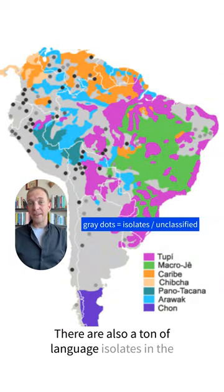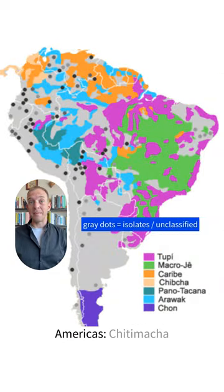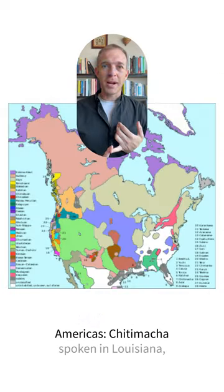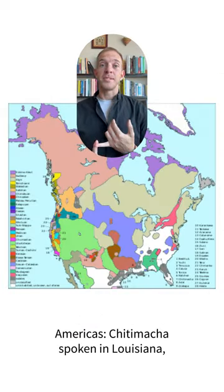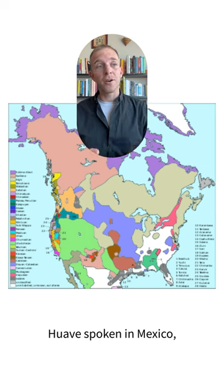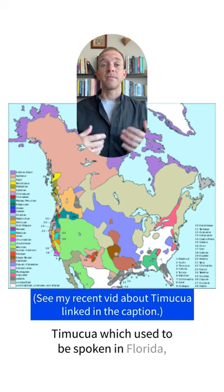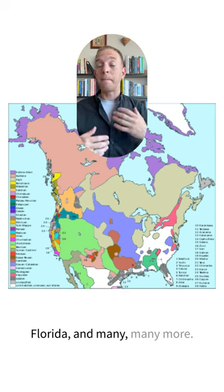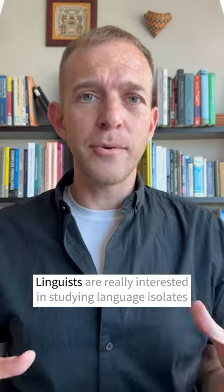There are also a ton of language isolates in the Americas: Chitimacha, spoken in Louisiana; Huave, spoken in Mexico; Timucua, which used to be spoken in Florida, and many, many more.